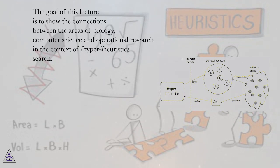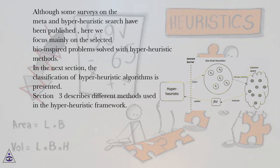The goal of this lecture is to show the connections between the areas of biology, computer science, and operational research in the context of hyper-heuristic search. Although some surveys on the meta and hyper-heuristic search have been published, here we focus mainly on selected bio-inspired problems solved with hyper-heuristic methods. In the next section, the classification of hyper-heuristic algorithms is presented.